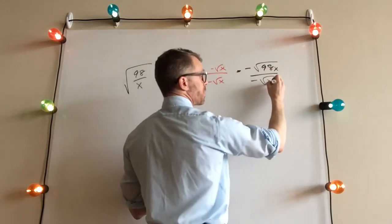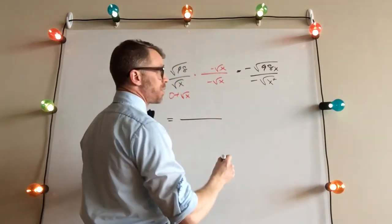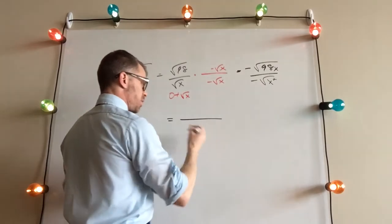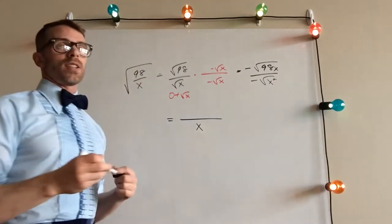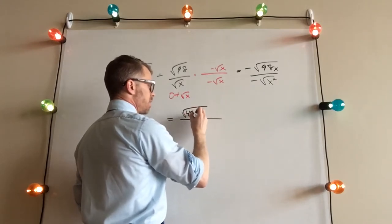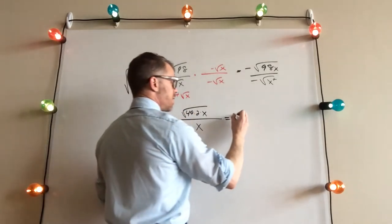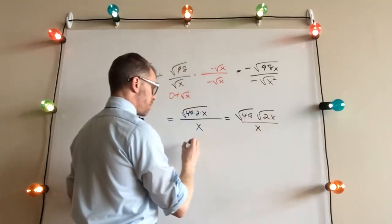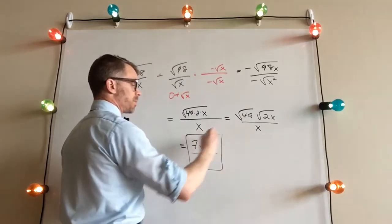Down below, we get negative √(x²). The negatives cancel out. The square root of x squared — those cancel each other out, so we're left with just x. Then for 98: 98 does have a perfect square factor — 98 is 2 times 49. The 49 is the perfect square, so we get 7√(2x) over x.